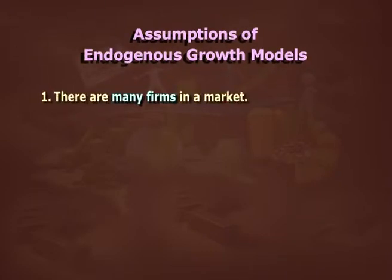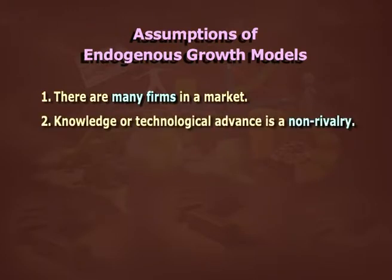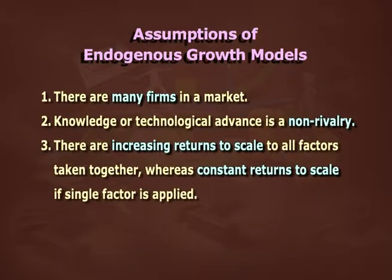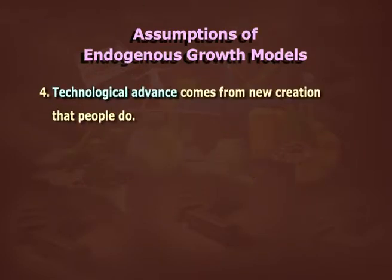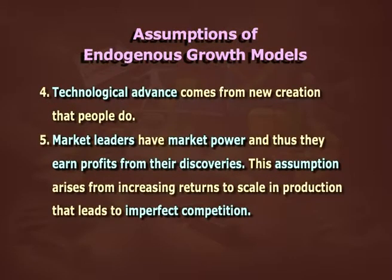The new growth theories are based on some assumptions. Firstly, there are many firms in a market. Secondly, knowledge or technological advance is non-rivalrous. Thirdly, there are increasing returns to scale to all factors taken together, whereas constant returns to scale if a single factor is applied. Fourthly, technological advance comes from new creations that people do. Fifthly, market leaders have market power and thus earn profits from their discoveries. These assumptions arise from increasing returns to scale in production that lead to imperfect competition — these are the requirements of an endogenous growth theory.